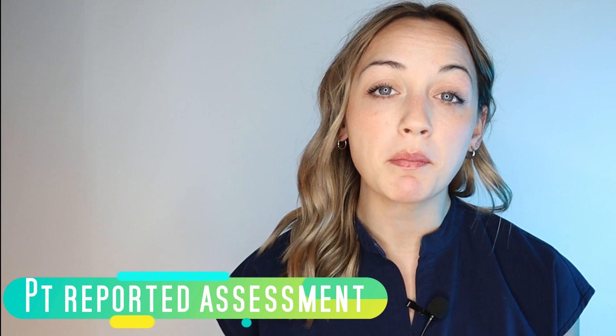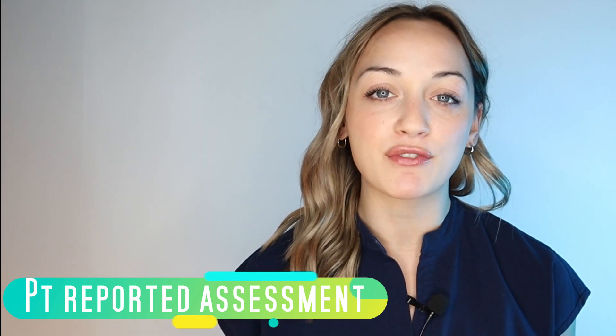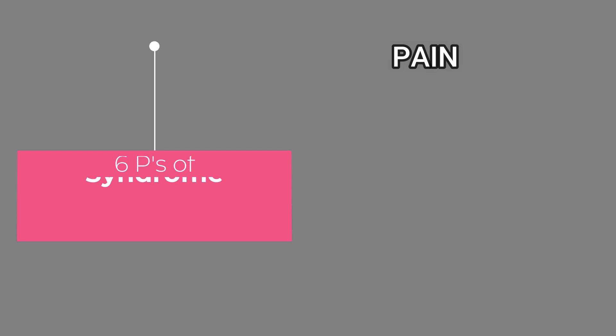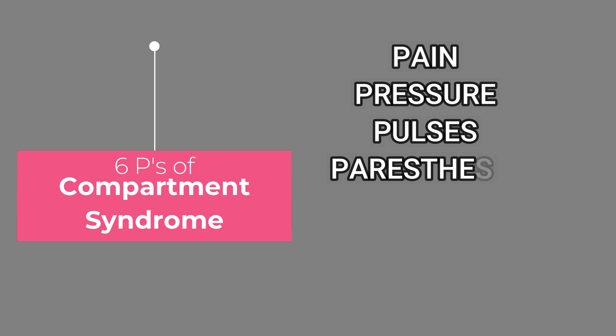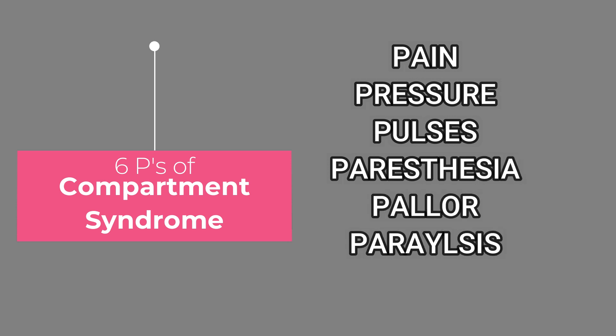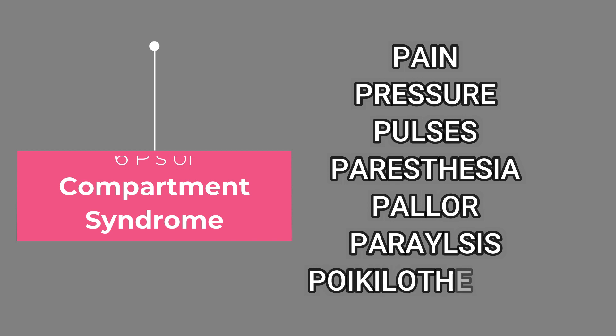I also want you to remember the six Ps of compartment syndrome. The six Ps are pain, pressure, pulses, paresthesia, paralysis, pallor, and poikilothermia. Listen to your patient and remember these six Ps. All of these except pain and pressure are late symptoms of compartment syndrome, so make sure you are listening to what your patient is reporting to you.